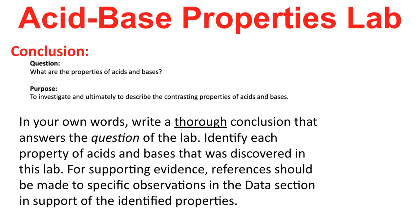That's the procedure. You have your observations recorded in the data section. Now it's time to write a conclusion. Whenever we write a conclusion, we always respond to the question of the lab — what are the contrasting properties of acids and bases? We have six rows after throwing out the third row. Examine those six rows and ask yourself: how are acids in columns one and two different than bases in columns four and five? Write six statements describing the six contrasting properties of acids and bases, and provide supporting evidence with specific references to parts of the data section.